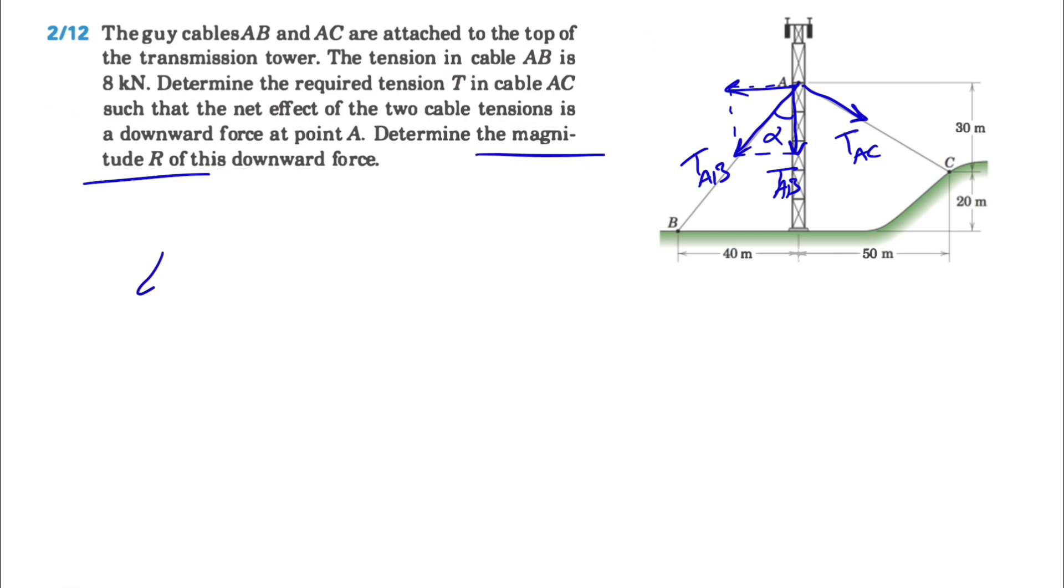To find alpha, we know that the tangent of alpha will be the opposite, which is 40 meters, divided by the adjacent, which is 30 plus 20, so 50. From here we can find alpha, which will be 38.7 degrees.